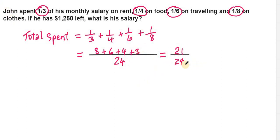So this means if you divide up his salary or his monthly income into 24 equal parts, he would have spent 21 of those parts. So how many parts he has left?